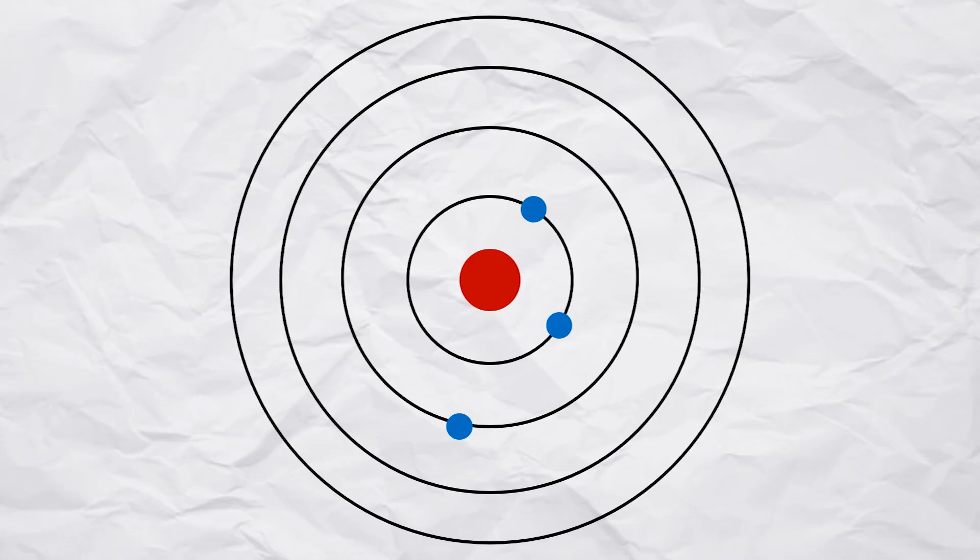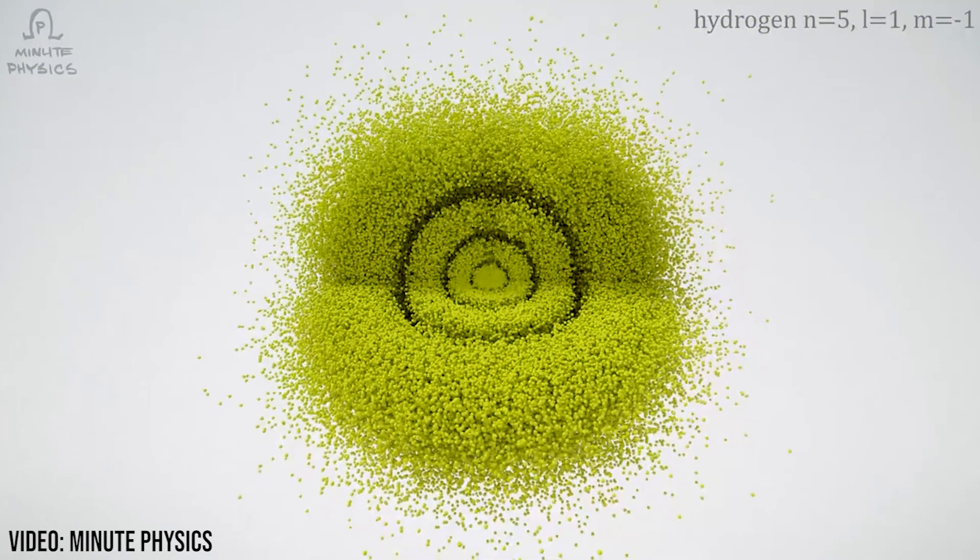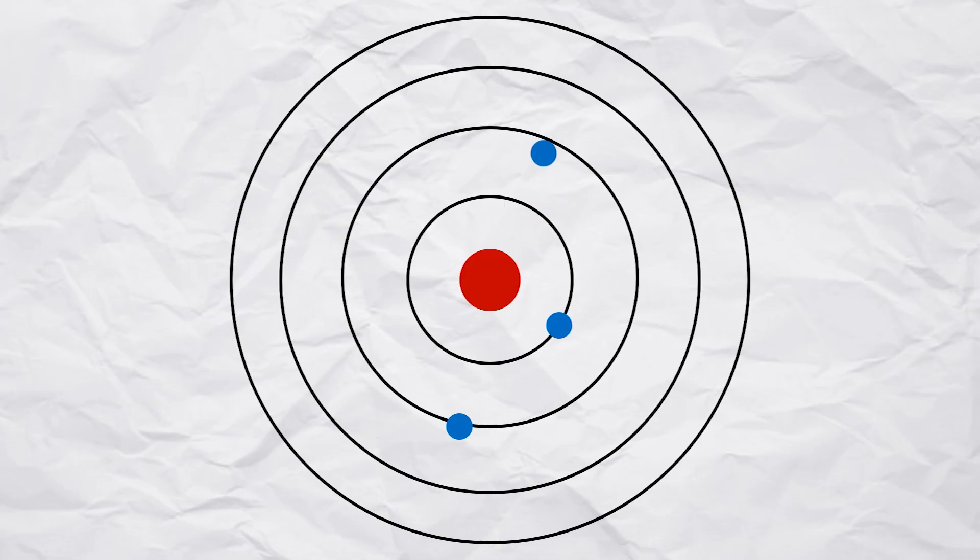This is the atomic model by Bohr. Whilst the Schrodinger cloud model is more accurate, Bohr's model is much clearer for this explanation. As an electron jumps from the inner ring to an outer ring, the energy of the atom increases. This increase in energy is the foundation of how quantum batteries work.